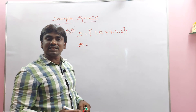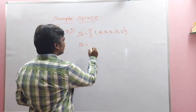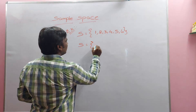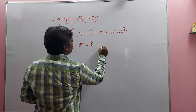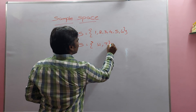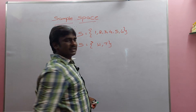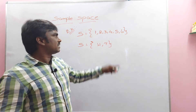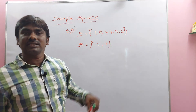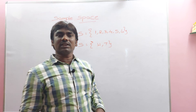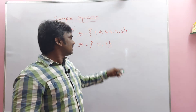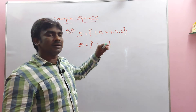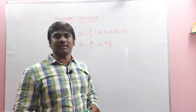Similarly, when you toss a coin, what is the sample space? The sample space is {H, T} — head and tail. When you roll a die, sample space is 1 to 6; when you toss a coin, sample space is head and tail.